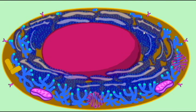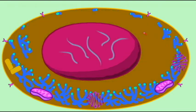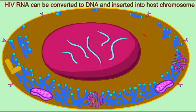HIV can also convert its RNA into DNA and insert the viral DNA into the human DNA chromosomes, where the viral genome can lie dormant for as long as 10 years. An individual who is HIV positive may not develop the symptoms of full-blown AIDS because the virus is lying dormant, as its DNA has been inserted into the chromosomes of the host cells.